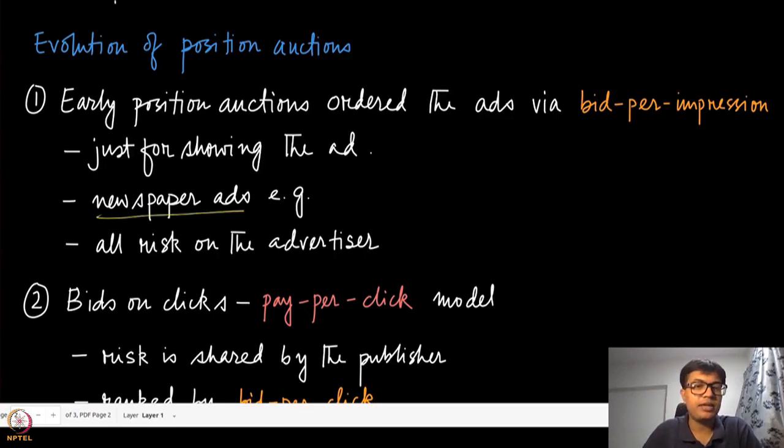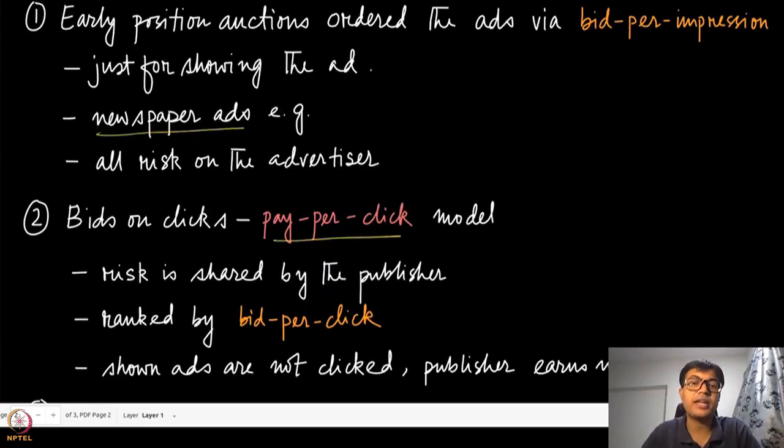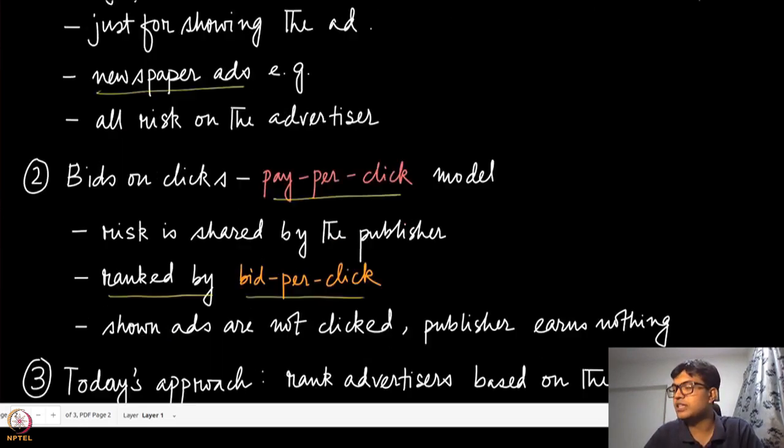When the bids became online, it brought the advent of pay-per-click models. The advertiser and the publisher are now sharing the risk of when the ad will actually be seen. Click is a very explicit way of measuring that the ad has been seen. Instead of charging advertisers on impression alone, it charges on the click. The publisher will not ask the advertiser to pay anything if the ad is never clicked.